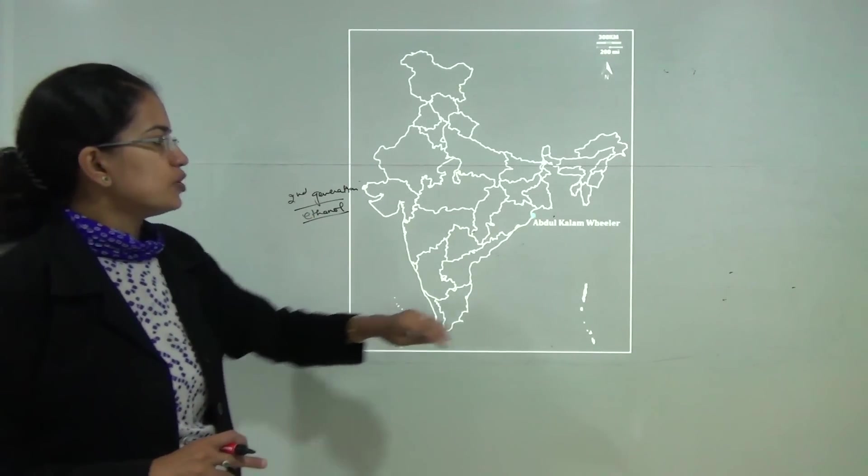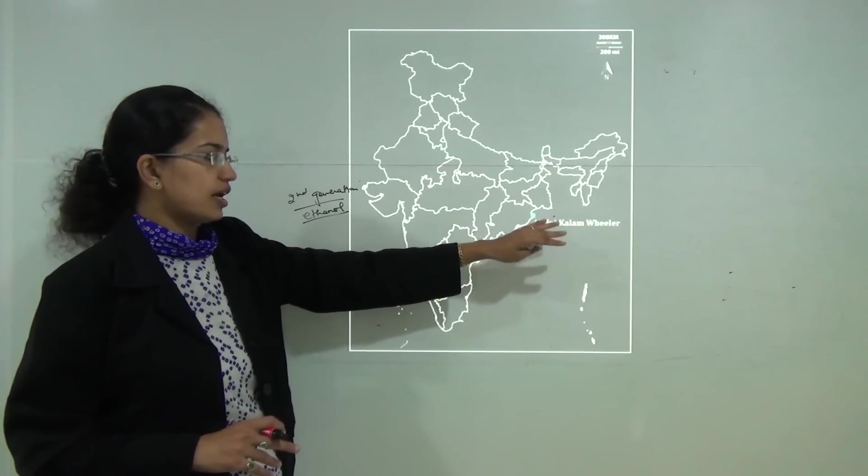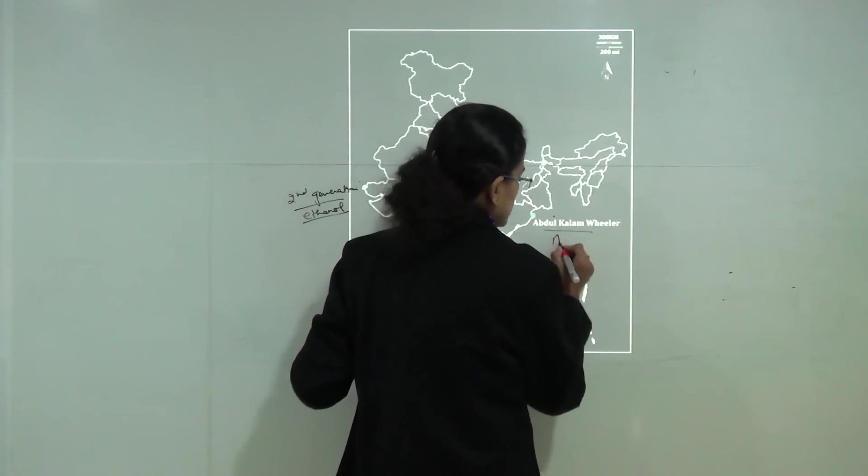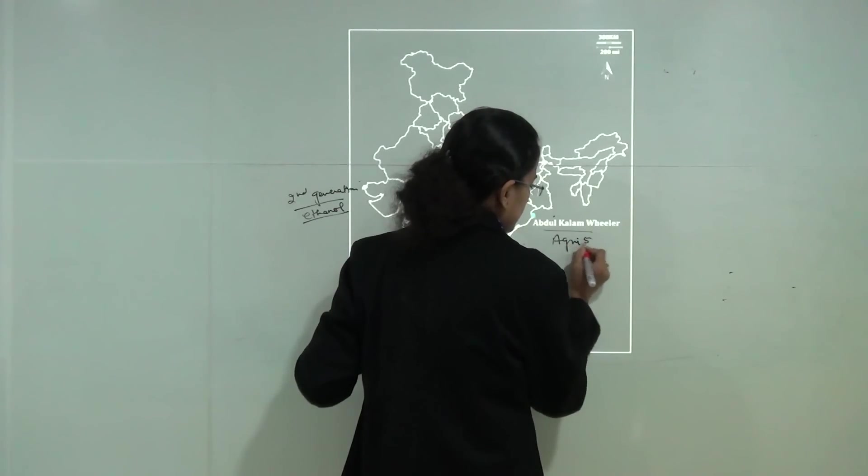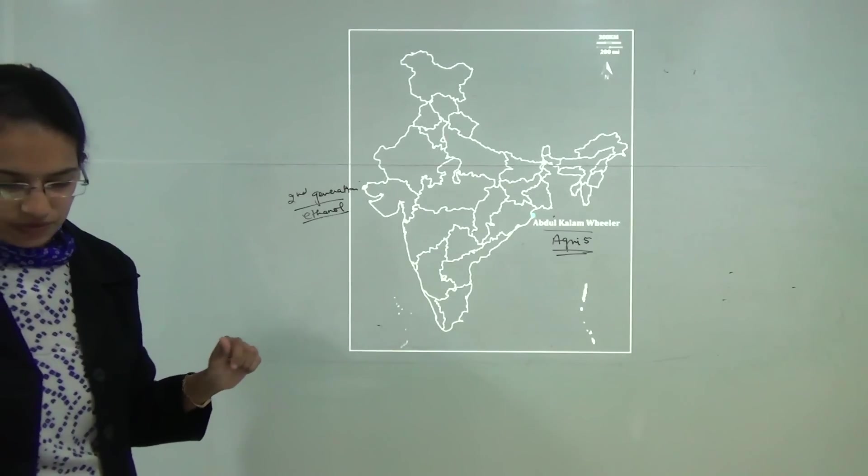Next is Abdul Kalam Wheeler Island. This island has been named after Abdul Kalam and from this Abdul Kalam Wheeler Island, there was the launch of Agni 5 missile which took place and this island lies off the coast of Odisha.